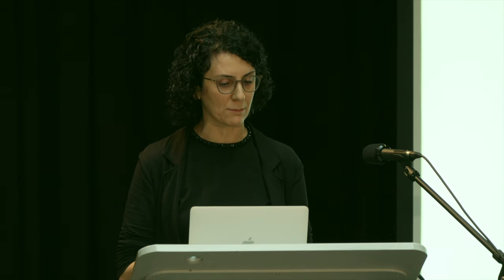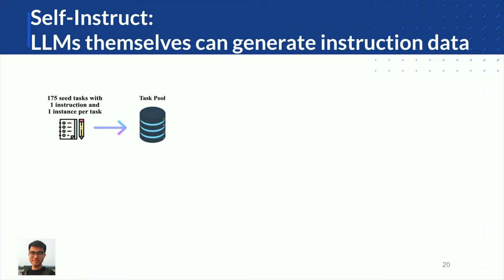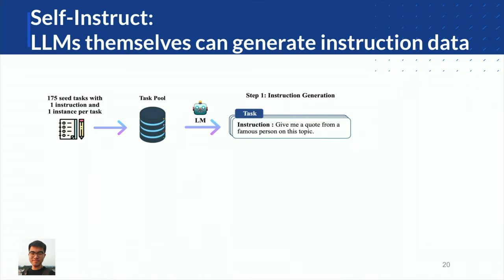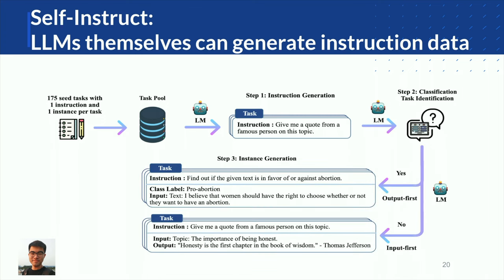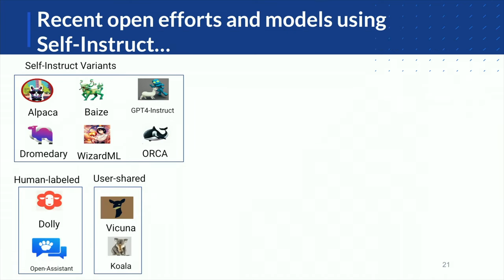Our idea was to introduce self-instruct, where we instruct our large language models to generate instructions themselves. We created this pipeline by initializing language models with a small list of about 200 seed tasks, then having the models generate new instruction-type language given these seeds, generate the specific input and output, and finally apply filtering to remove noisy data. Through filtering, we created a better pool of tasks and repeated this process multiple times, showing quite good promise in building better instruction data.